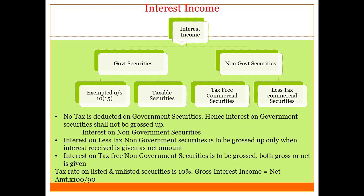For government securities, no tax is deducted, hence interest on government securities shall not be grossed up — the word 'government' will appear in the security name. For non-government less-tax commercial securities, grossing up is required only when the net amount is given; if the gross amount is given, no grossing up is needed. For tax-free commercial securities, in both cases — whether gross or net amount is given — the amount must be grossed up. The formula for grossing up is: gross interest income = net interest income × 100 ÷ 90.